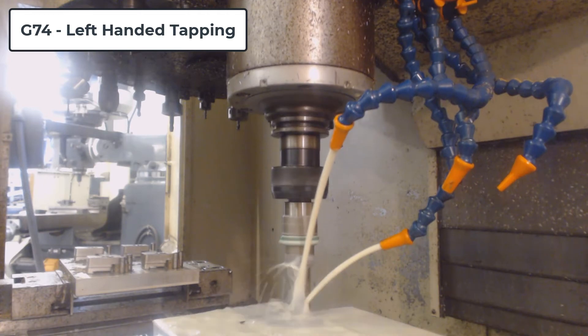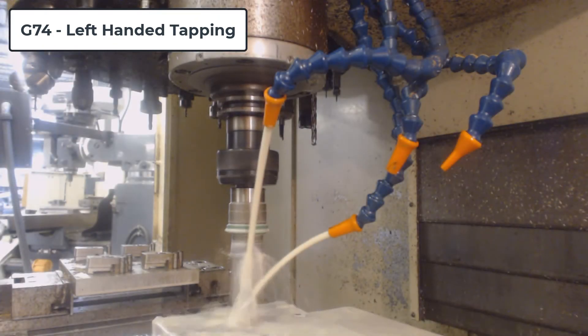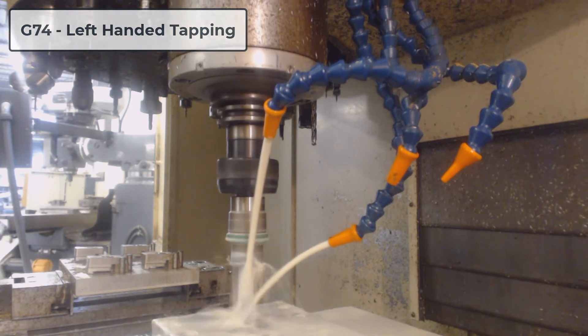For this cycle, the spindle will spin counterclockwise while the tool feeds from the R-plane to the program depth, at which point it will reverse to spin clockwise while it feeds out of the hole.